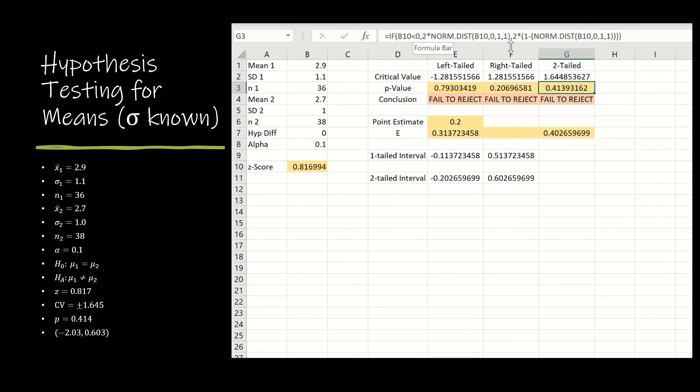So whichever way you do it is fine. What this is saying is if the z-score is negative, I'm going to take 2 times the left-hand distribution. And if it's positive, I'm going to take 2 times the right-hand distribution. And those values just came from the left-hand distribution and the right-hand distribution. Remember you can use norm s-dist or you can use norm dist with 0 and 1 as the mean and standard deviation. It's the same thing.